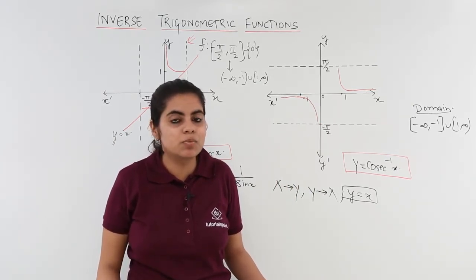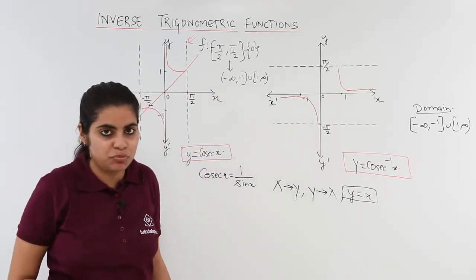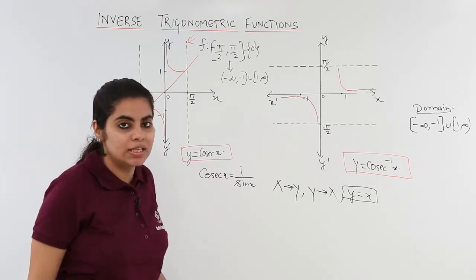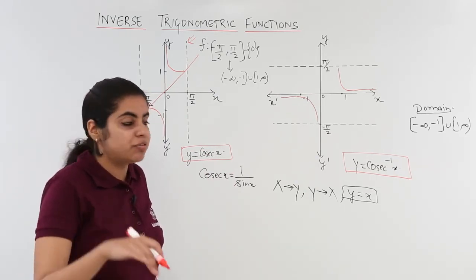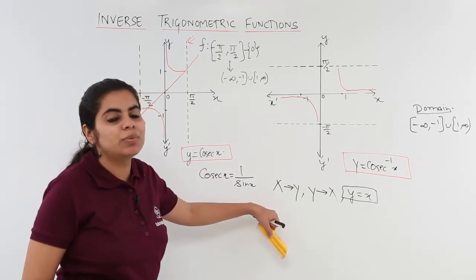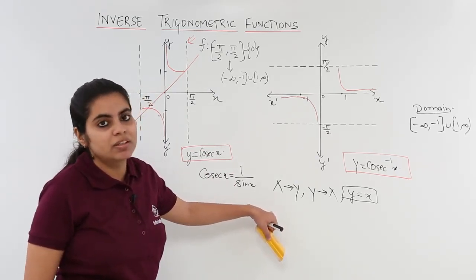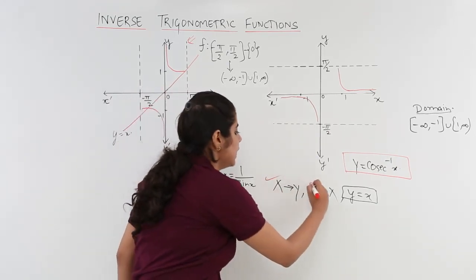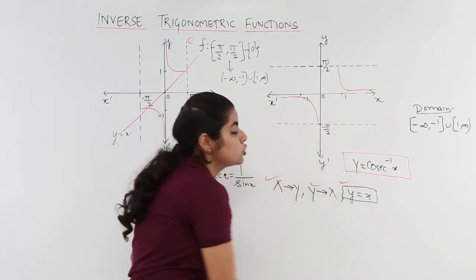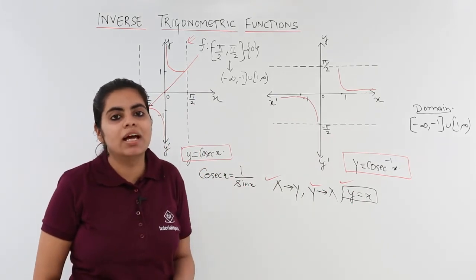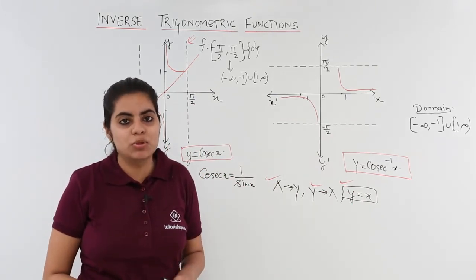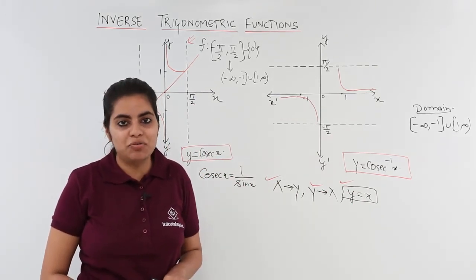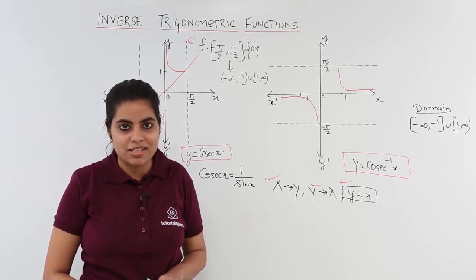The three simple steps to follow after drawing the original cosecant x graph are: first, interchange the x-axis with the y-axis; second, interchange the y-axis with the x-axis; and third, take the reflection about the line y is equal to x. In the next video, we will be seeing the graph of secant inverse x.